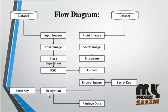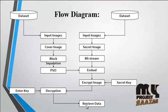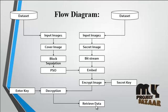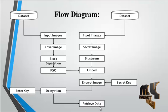After decryption, the decrypted image is shown. The decrypted image then undergoes retrieval — that is, retrieving the data, which is the secret image embedded into the cover image. The secret image is retrieved from the cover image, and the two different images are retrieved by the decryption side, i.e., the user side.